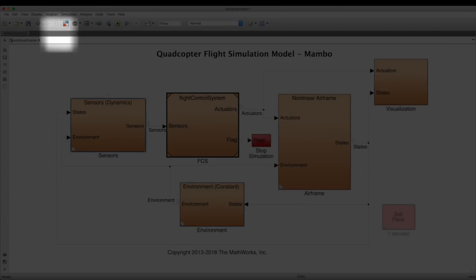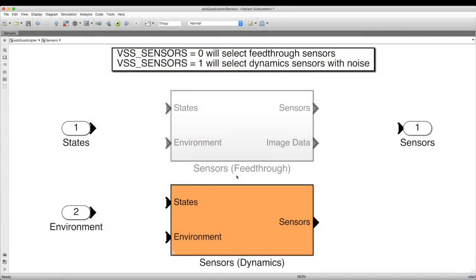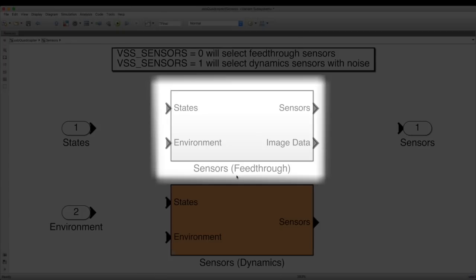Okay, lastly, I want to go into the sensors block. And, well, you've guessed it, this is also a variant subsystem. Here we can select dynamic sensors with noise or feed-through sensors.